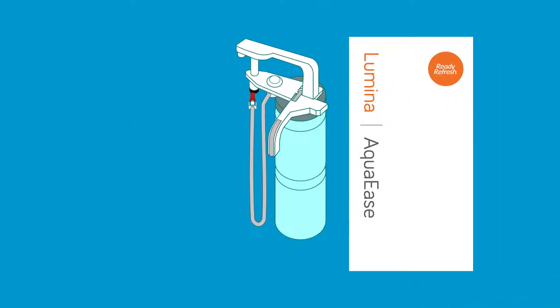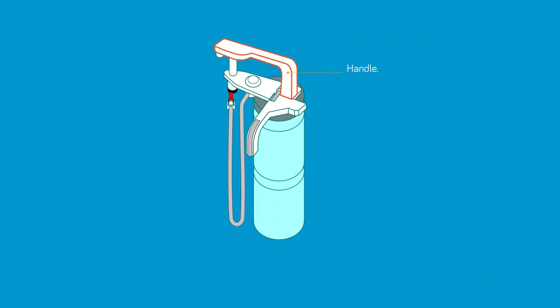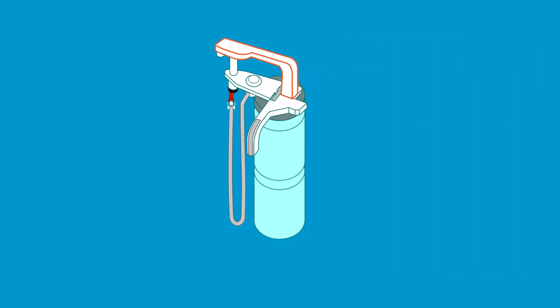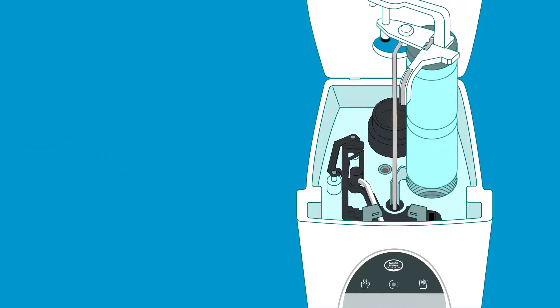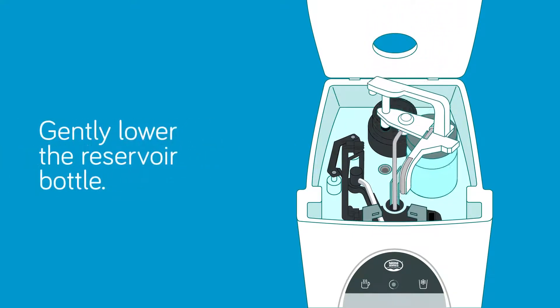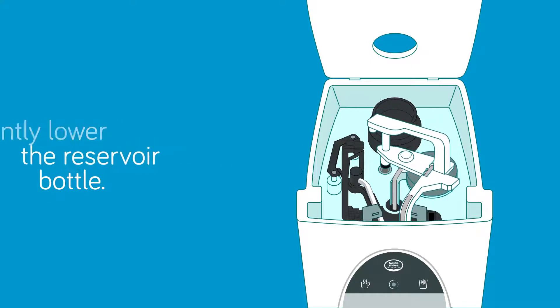It's time to remove the packaging and install the new Aqua Ease water cartridge. Start by holding the handle of the upper water cartridge. Feed the upper cartridge tube down the small round cavity near the front of the unit. Gently lower the reservoir bottle into the large round opening.